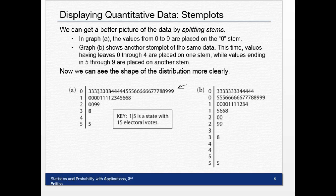In graph B, we split the stems. Notice there's two of each—zero, zero, one, one, two, two, all the way down. In the first zero you would put anything zero to four as a leaf, and then five to nine. This would be ten to fourteen, this would be fifteen to nineteen. Sometimes we use split stems so we can see the shape of the distribution more clearly.